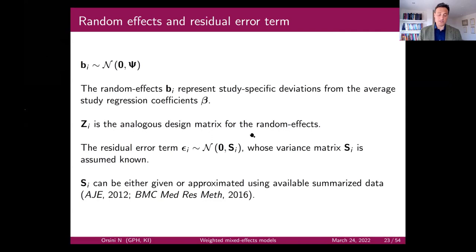Random effects represent study-specific deviations from the average study regression coefficient. We put random effects on all regression coefficients. The residual error term is assumed to follow a multivariate normal with a mean of zero and a certain variance-covariance structure defined by the weights.